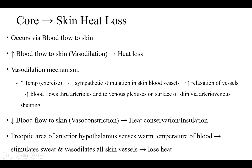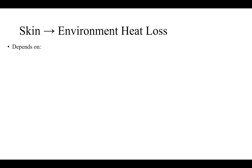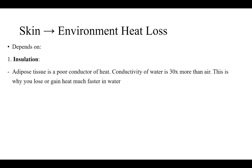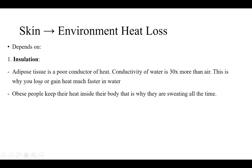We're going to talk about the detailed mechanisms of how these occur. How does skin lose heat to the environment? It depends on insulation. Adipose tissue is a poor conductor; water is a good conductor, better than air, and this is why we lose or gain heat much faster in water. Since obese people have too much adipose tissue, they keep their heat inside their body, which is the reason they're sweating all the time.